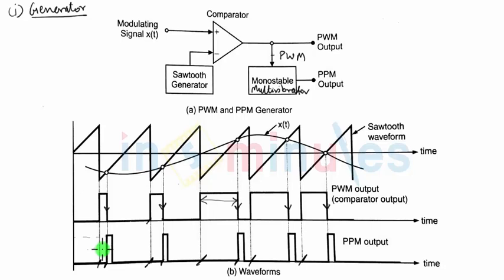That is not the case in PPM signal because in PPM signal, width of every pulse is constant, so the transmission power required is also constant in every pulse.